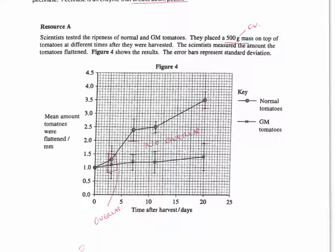From day 7 onwards, so you can see here, this is the day 7 point. After this point, you've got significantly flattened less with the GM, so these are significantly flattened less because the standard deviation bars do not overlap. Up to day 3, there is not a significant difference because the standard deviations overlap.